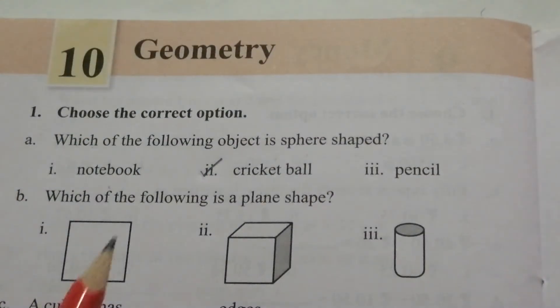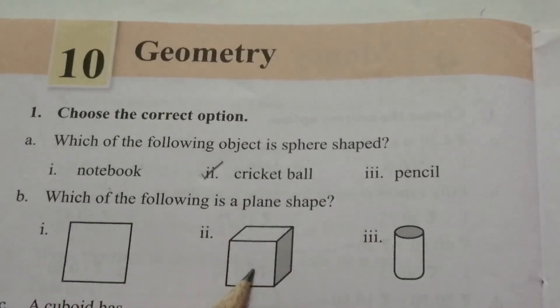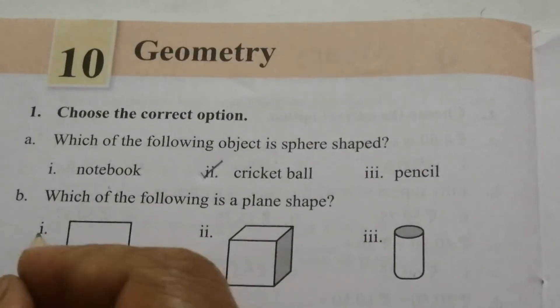B. Which of the following is a plane shape? Square, cube, cylinder. The answer is square.